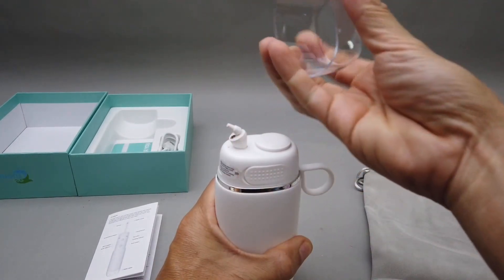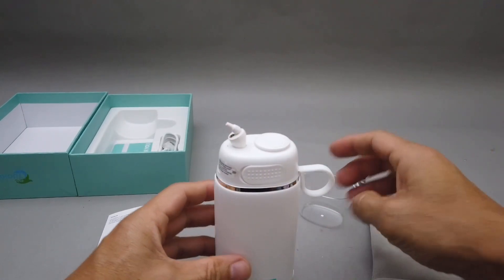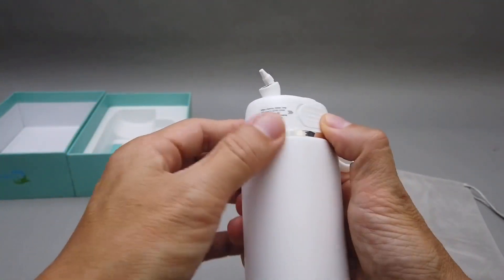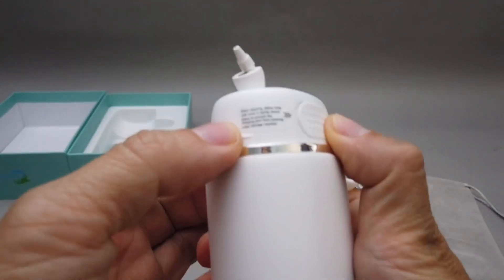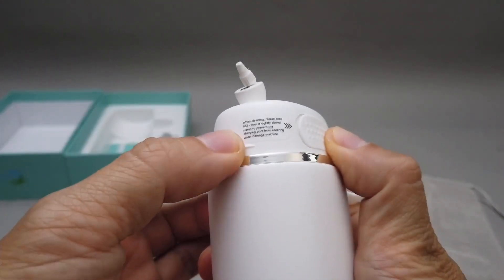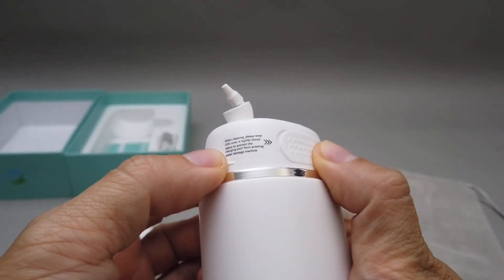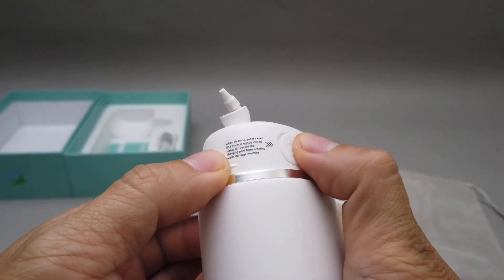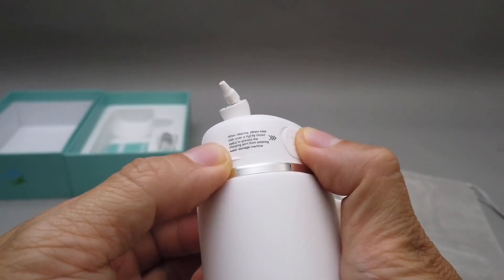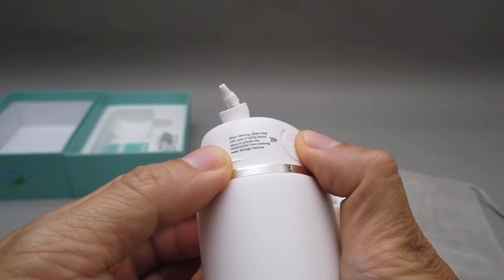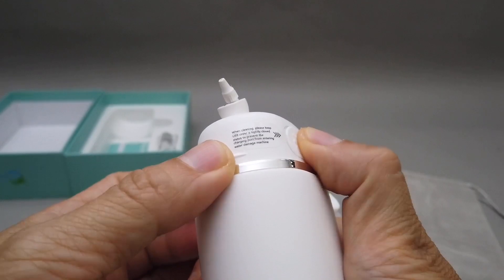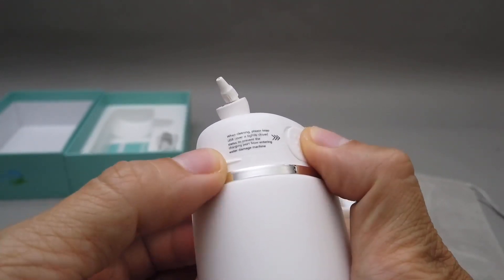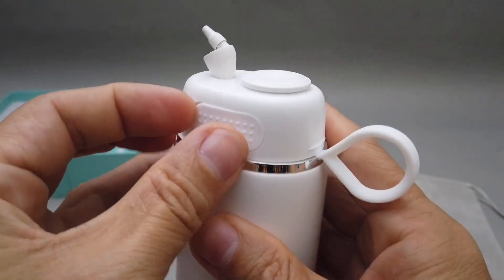Take out this cup or protection layer. Oh, this is so tiny, you can barely read it. When cleaning, please keep USB cover... oh this is a USB cover, it's tightly closed. So for this to prevent the water from... yeah, so this is USB charging.